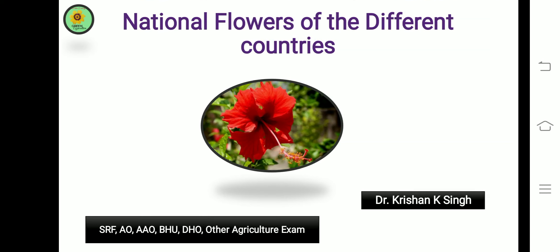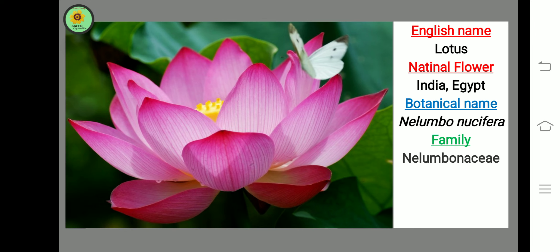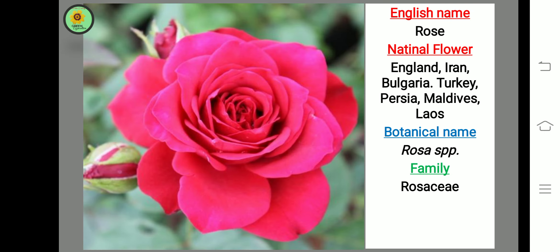Hello friends, in this video we will talk about the national flowers of different countries. The first flower is Lotus, botanical name Nelumbo nucifera, family Nelumbonaceae, national flower of India and Egypt.